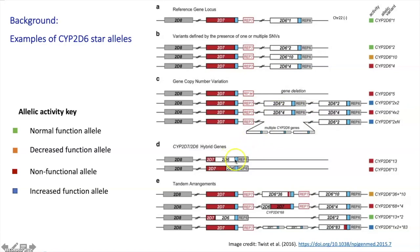For example, here where you have these hybrid gene copies and also these tandem rearrangements. Additionally, here in C where we have the gene duplication alleles, it can be challenging to infer which of the gene copies is actually duplicated, and this has implications for phenotype prediction.